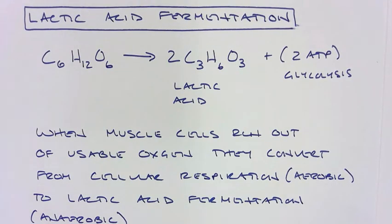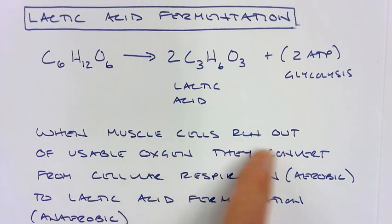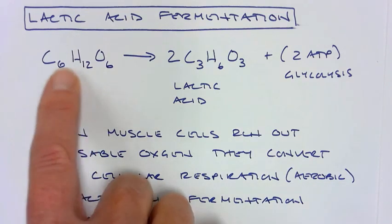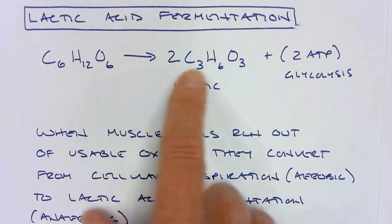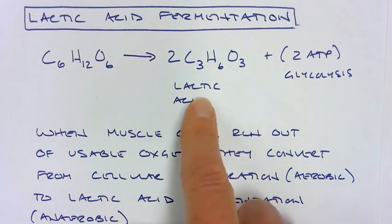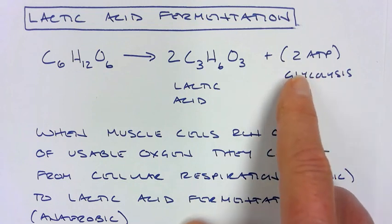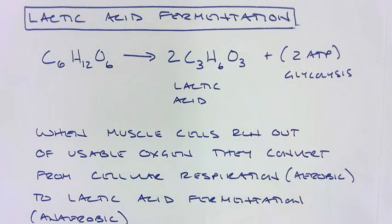The other type of fermentation is called lactic acid fermentation. And this is when your muscle cells run out of usable oxygen. They convert from cellular respiration, which is aerobic, into lactic acid fermentation, which is anaerobic. Again, we start with glucose. It is basically split in half into two molecules of lactic acid. And again, through the process of glycolysis, we have a net gain of 2 ATP.